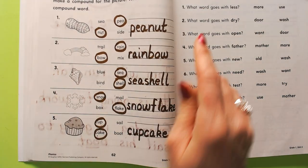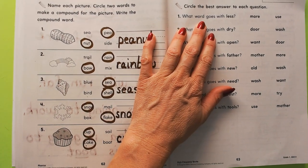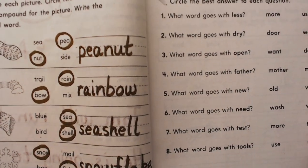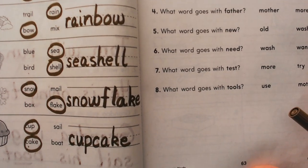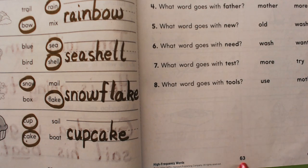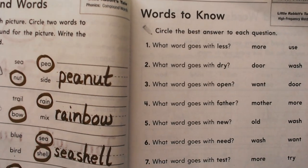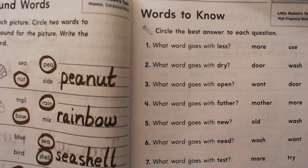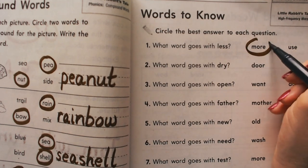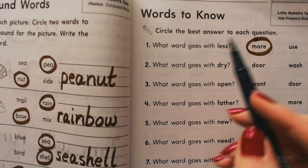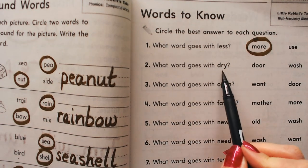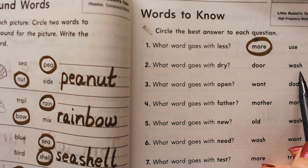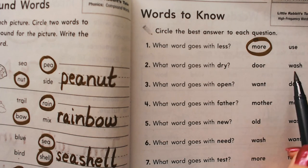We're going to circle the best answers for each question on page 63. What word goes with less? More or use? I would say more, because less and more are opposite words, so they have an association with one another. What word goes with dry? Door or wash? I would say wash because wash and dry are opposite words.